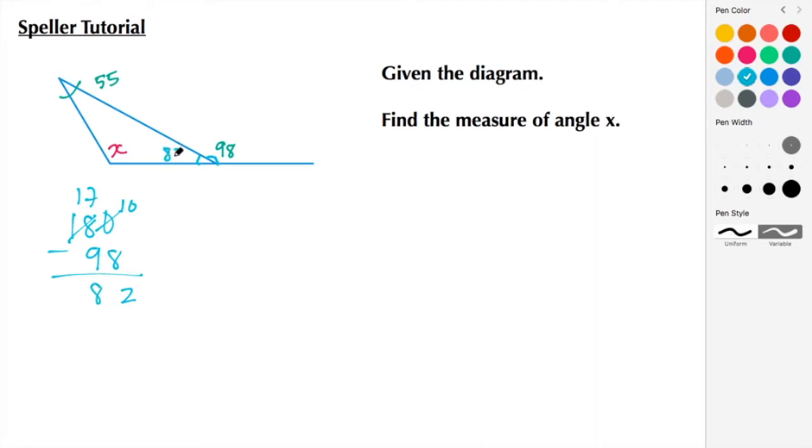And here I have a triangle. We know that the interior angles of a triangle add up to 180 degrees. So let's add up the two angles that we have and then subtract from 180 to figure out what X is.